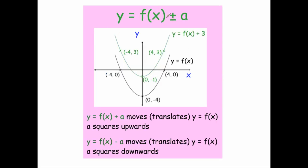Next, y equals f of x plus a, or y equals f of x minus a. This translates the graph a squares upwards. For example, y equals f of x plus 3 shifts the graph up 3 squares: (0, -4) goes to (0, -1), (4, 0) goes to (4, 3), and (-4, 0) goes to (-4, 3). If it were minus, like f of x minus 2, it would move the curve down 2 squares.